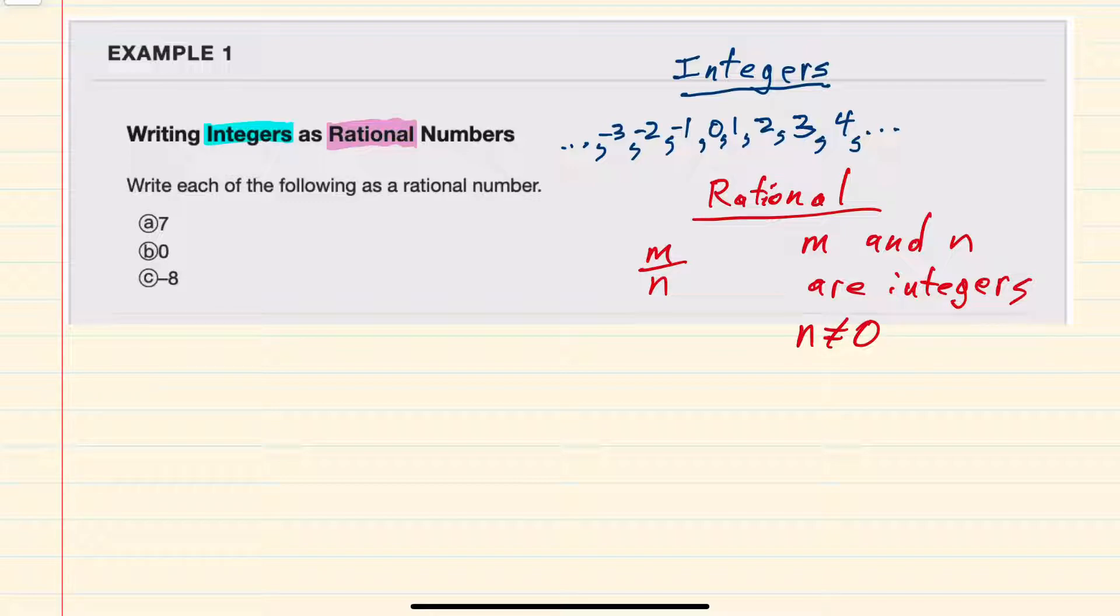And since we're asked here to write each one of these as a rational number, starting with 7, we can write 7 as a fraction where our numerator and denominator are integers. And the easiest one would just be to write a 7 in the numerator and a 1 in the denominator.